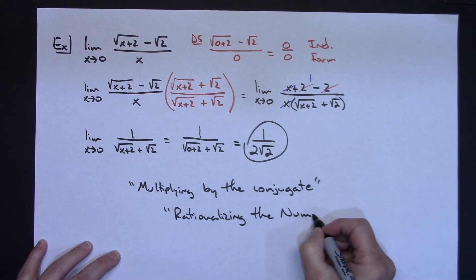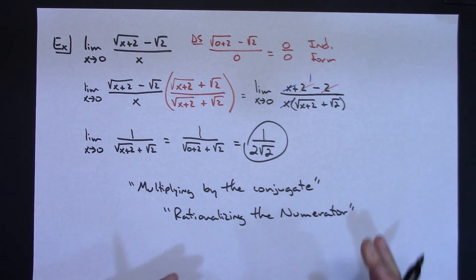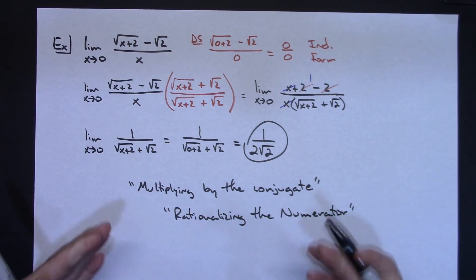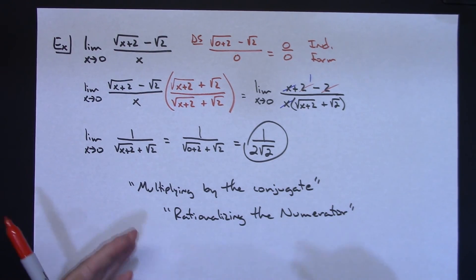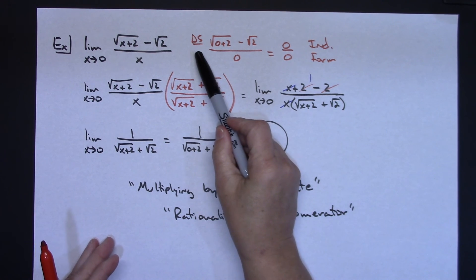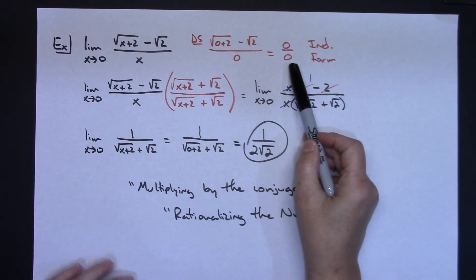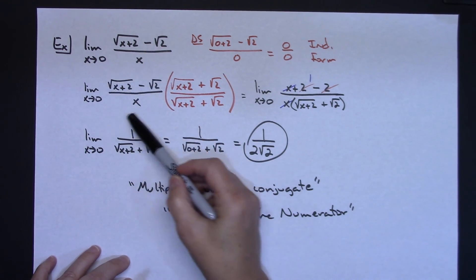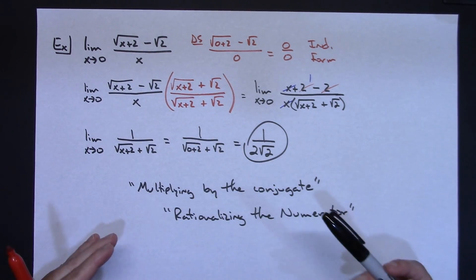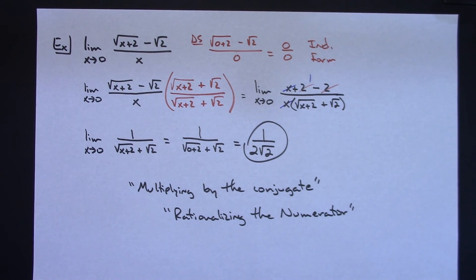Those are three really useful algebraic methods for evaluating limits analytically. You're always going to want to do that initial direct substitution to verify you really do have 0 over 0. Once you have that indeterminate form, look at the type of function you have and decide which algebraic approach to take.